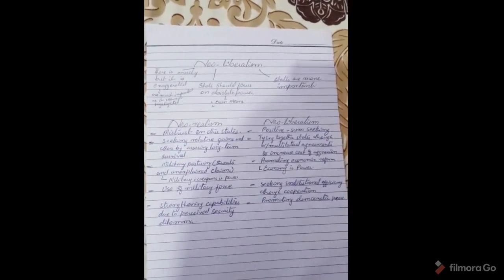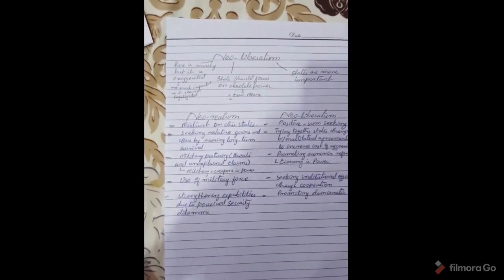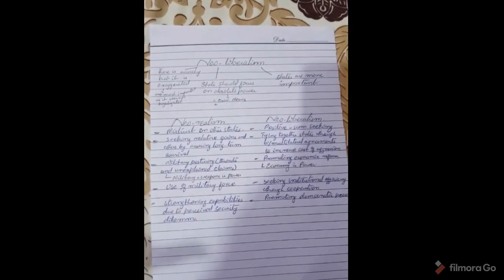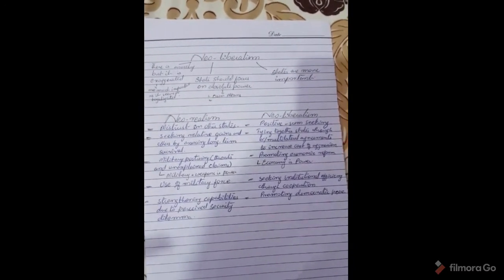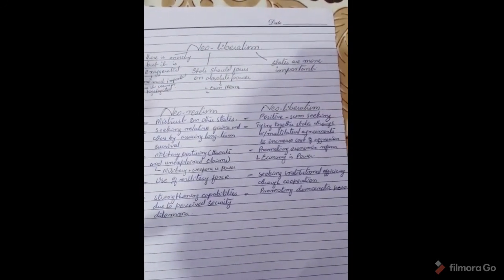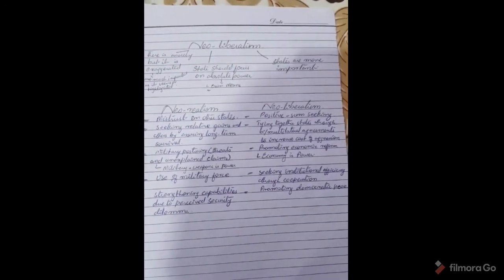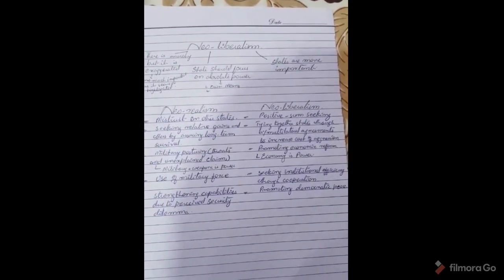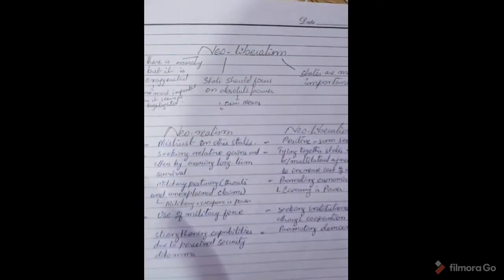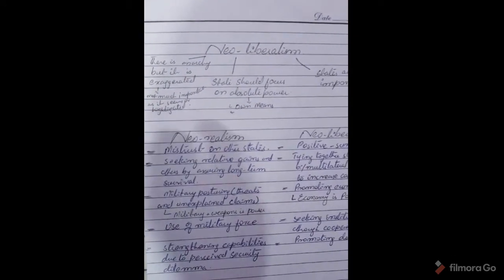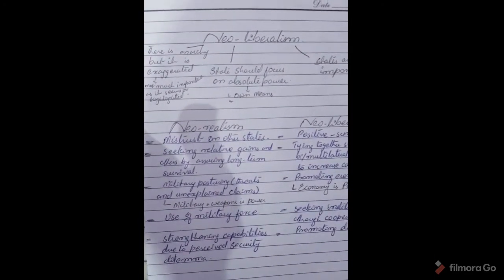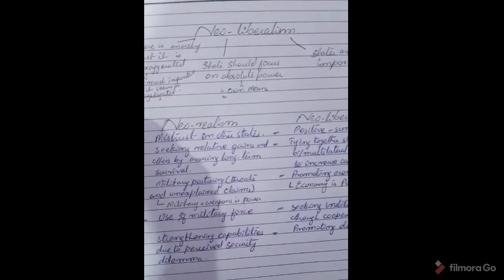Just as we studied realism and neo-realism — realism being an older version and neo-realism a more updated version — similarly, liberalism is somewhat outdated, and neo-liberalism is the updated version. Neo-liberalism says that anarchy does exist, but it is not as important as it is being highlighted — not much important as it seems or highlighted.